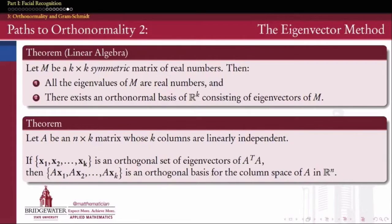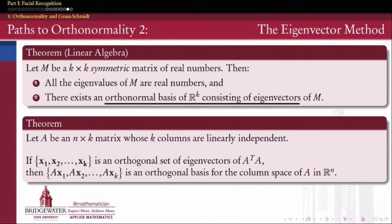The first fact is that if M is a symmetric k-by-k matrix, then two things are true. First, the eigenvalues of M are all real numbers. Second, we can find a complete set of k orthonormal eigenvectors of M, which will form a basis for R^k. So symmetric matrices have real eigenvalues, and we can choose the eigenvectors to be orthonormal. How cool is that? This gives us a way to produce an orthonormal set as eigenvectors of some symmetric matrix.